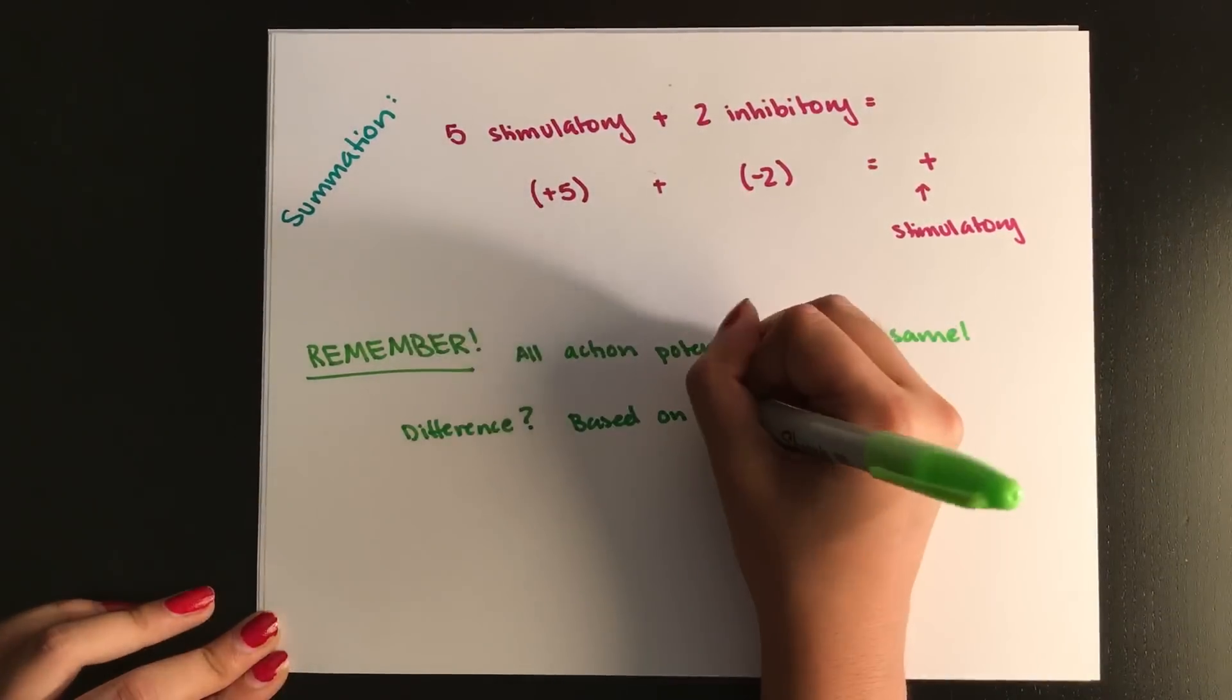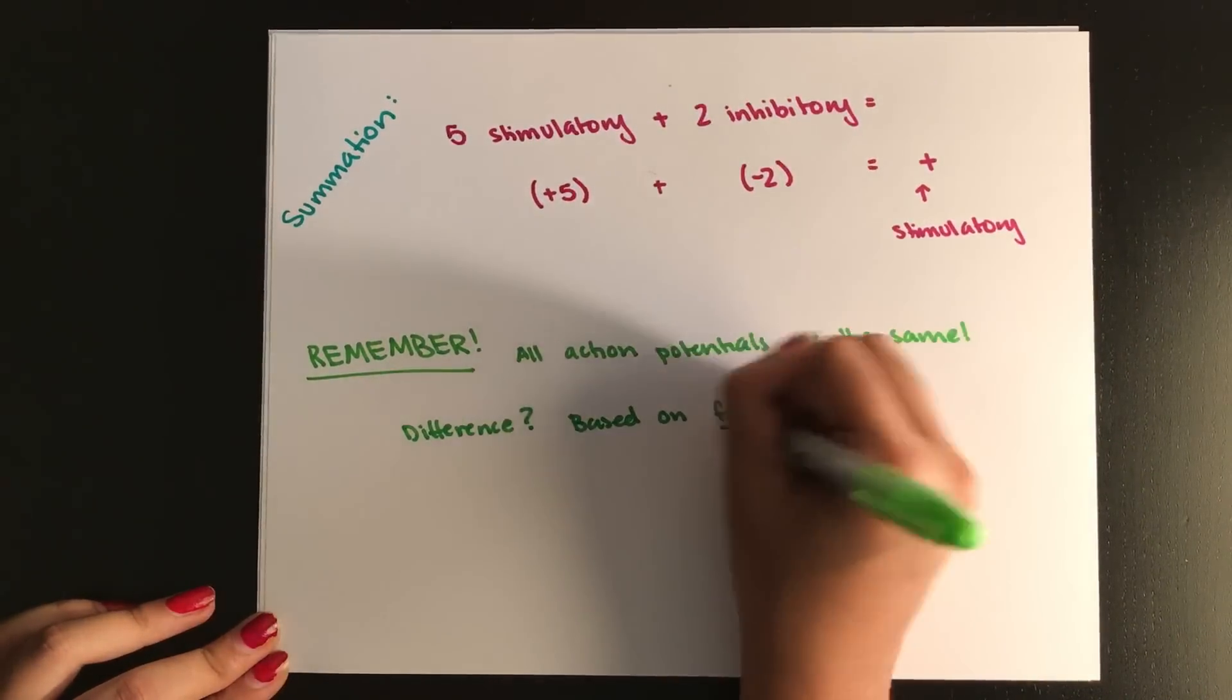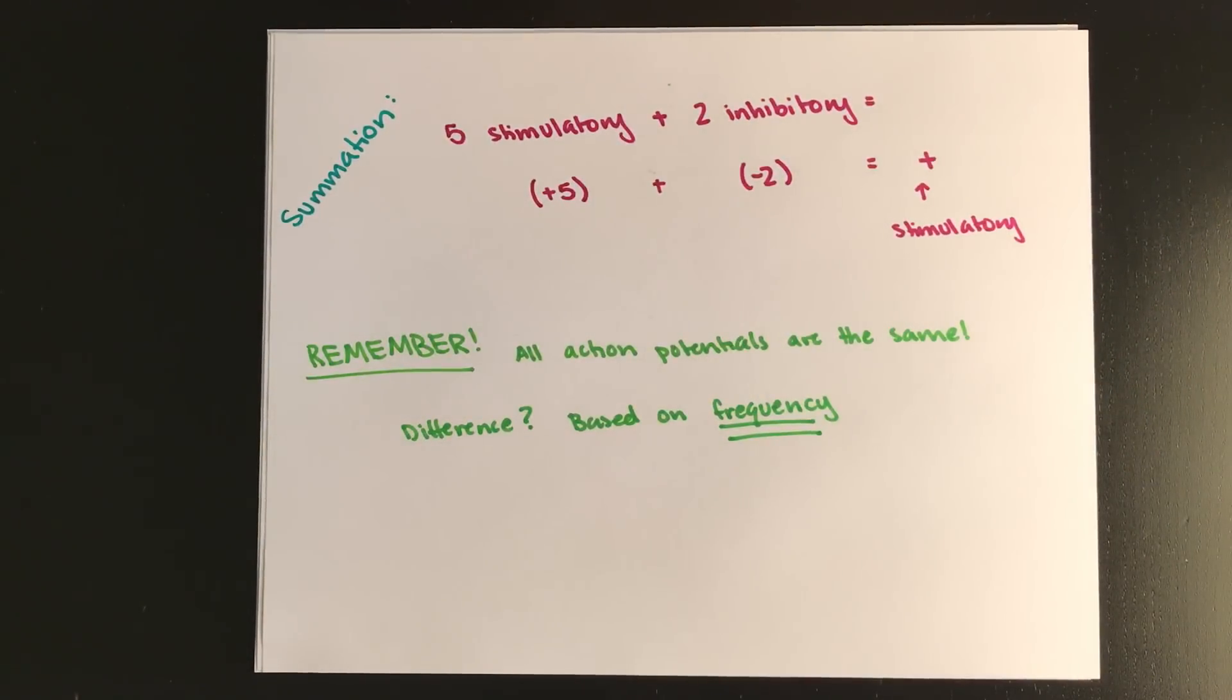But now you're thinking, okay, if I just got a paper cut versus if I'm having my leg amputated, how come, if it's the same action potential, why does my leg probably hurt like 10,000 times more? And so the reason that this occurs is based on the frequency, how often this action potential is happening. So when you get a paper cut, it's definitely not having an action potential as often as you would be. This is the weirdest example of your leg being amputated.